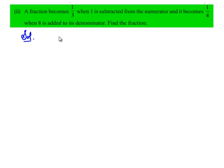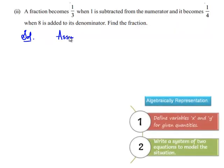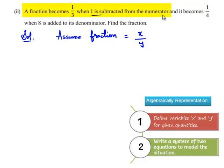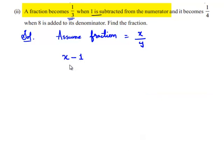Let us assume that the fraction is equal to x/y, where x is the numerator and y is the denominator. According to the given problem, when 1 is subtracted from the numerator, the fraction becomes 1/3. So the numerator is x, and when 1 is subtracted it becomes (x − 1)/y, which equals 1/3.